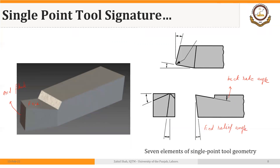From the front view, we can see the slope of the face of the cutting tool. The backward slope was the back rake angle, and the slope in the lateral direction is the side rake angle. So these two rake angles relate to the face of the cutting tool. Another angle visible in the front view is the slope of the side flank — that is the side relief angle. So from the front view we can see the side rake angle and the side relief angle.